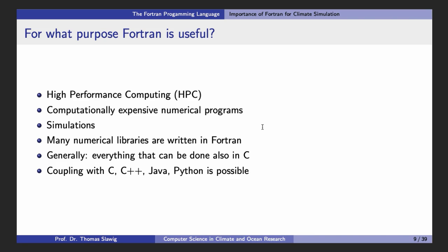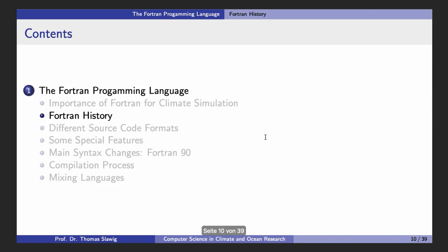FORTRAN is basically used for high performance computing, for codes which are expensive with respect to computer time, so this means for simulations. Many numerical libraries, for example for linear algebra, are written in FORTRAN. Generally we can do everything that is done in C can be done in FORTRAN and the coupling is also possible, which we will see at the end.